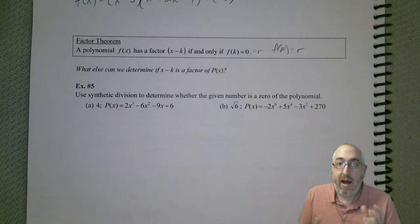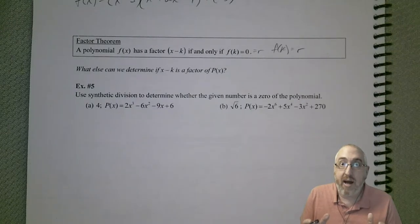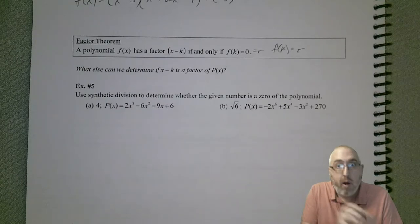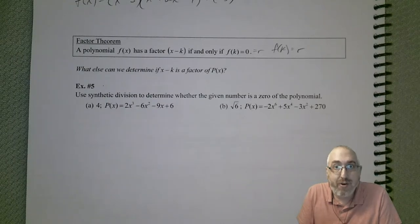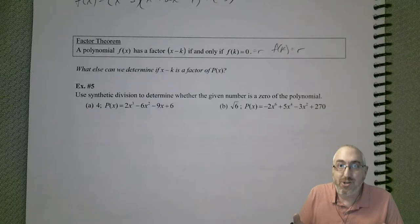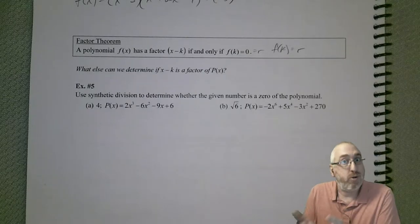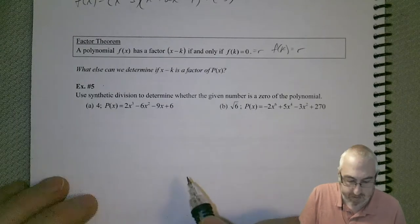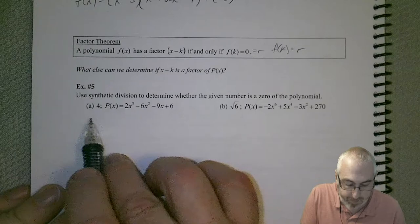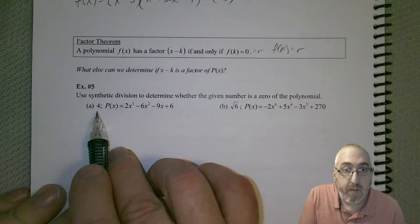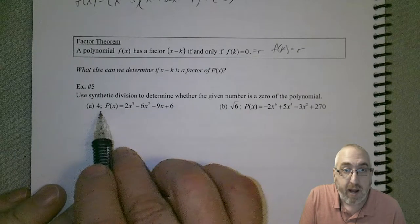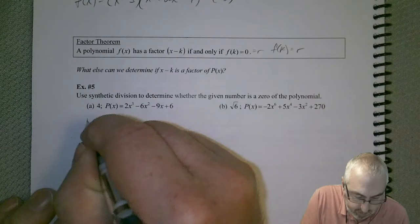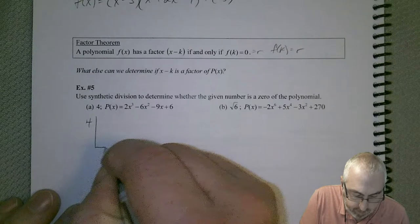So it's kind of a nice thing to check when you're looking for zeros. Is this number a zero or not? We can now just plug that into synthetic division and see if we get a 0 remainder. If we get our 0 remainder, then it's a factor. So it's a really nice theorem. So let's test it out. We got a value of 4, and we want to see if that's a zero for this polynomial function. So let's quickly plug it in and see what we get.